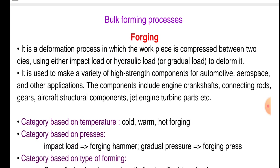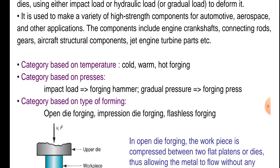Bulk forming processes — we will see now. Forging is a deformation process in which the work piece is compressed between two dies using either impact load or a gradual hydraulic load to deform it. It is used to make a variety of high-strength components for automotive, aerospace, and other applications. Components include engine crankshafts, connecting rods, gears, aircraft structural components, and jet engine turbine parts.